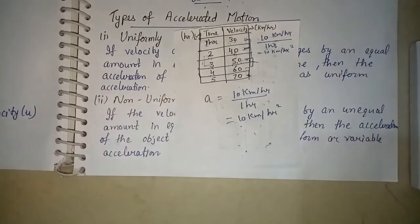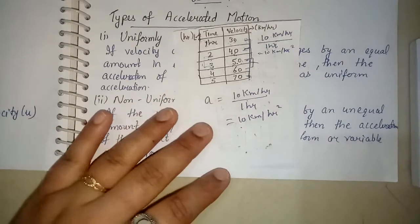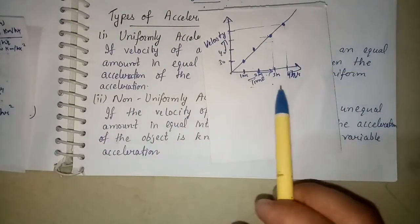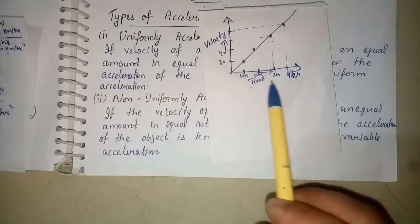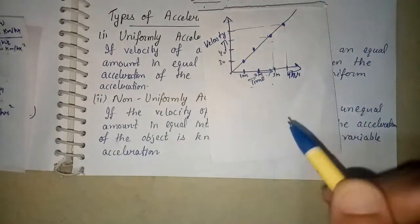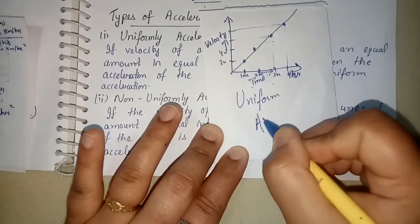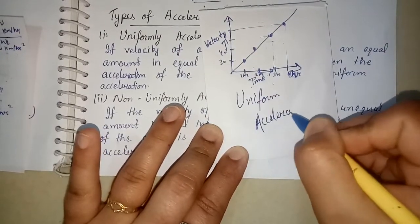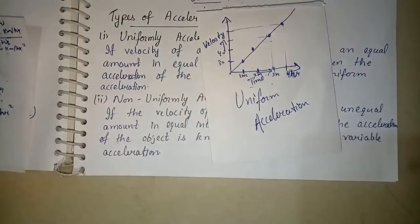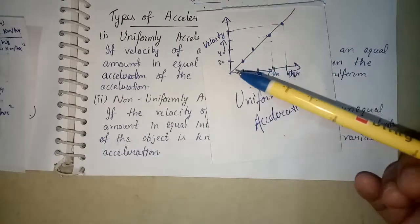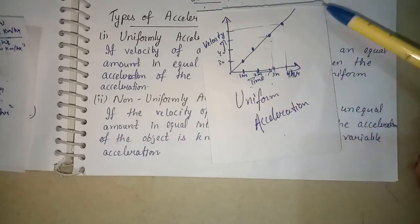Now we have to understand what is uniform acceleration or uniformly accelerated motion by uploading a graph. We will make a velocity-time graph for uniform acceleration. If we look at the velocity-time graph for uniform acceleration, we have done a simple study in 9th class. Our graph is a linear graph.